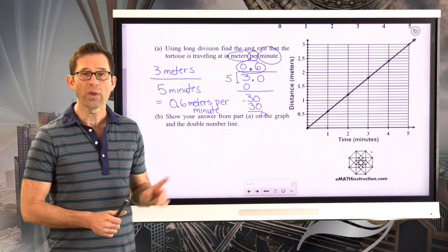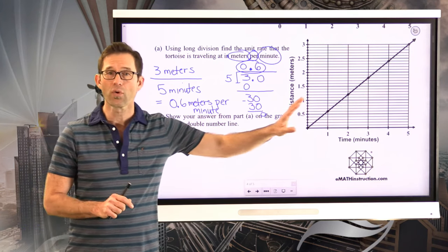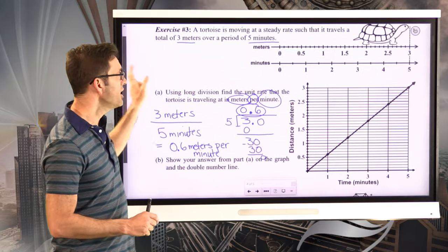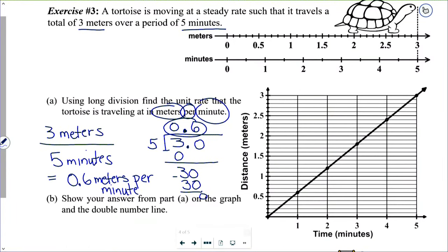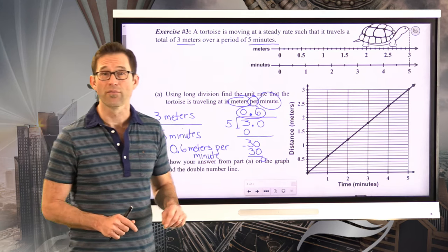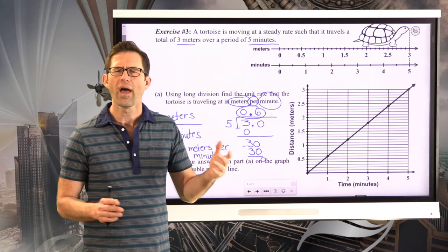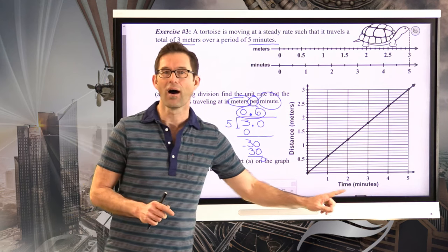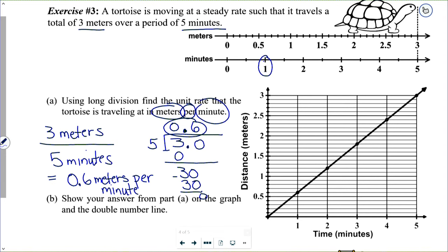In other words, where can we find this answer, 0.6 meters per minute, truly, on both the graph of the proportional relationship and even on the double number line? Think about that for a moment. Well, let's take a look at it on the double number line first. It's kind of cool. It's all about going to where one is on the x axis. In this case, the x axis is time. Up here, that's right here. So if we go to one right here, and we simply go directly vertical up to here, we see that's 0.6.